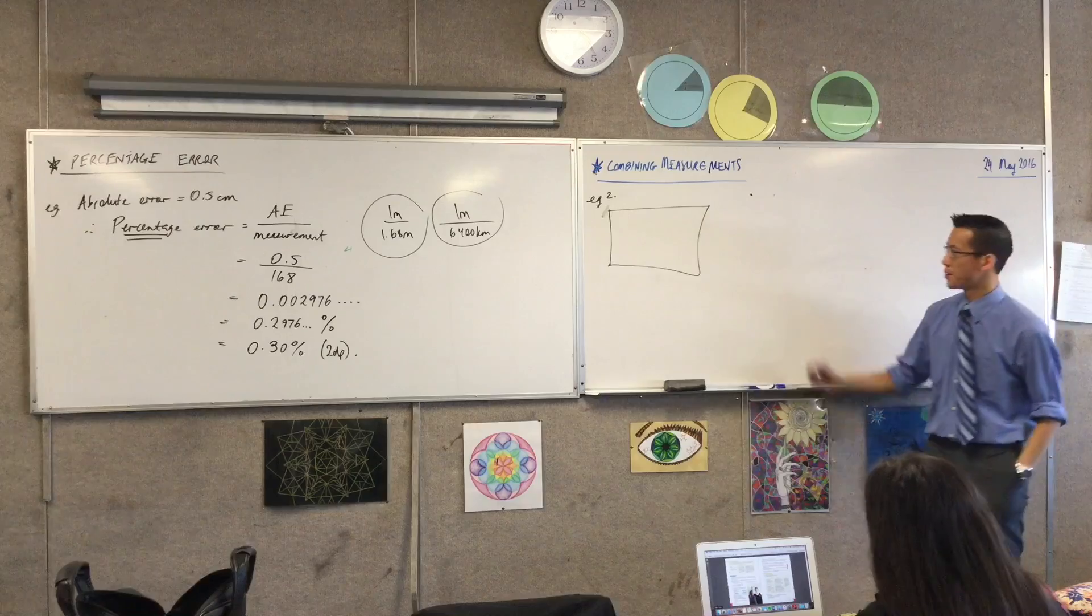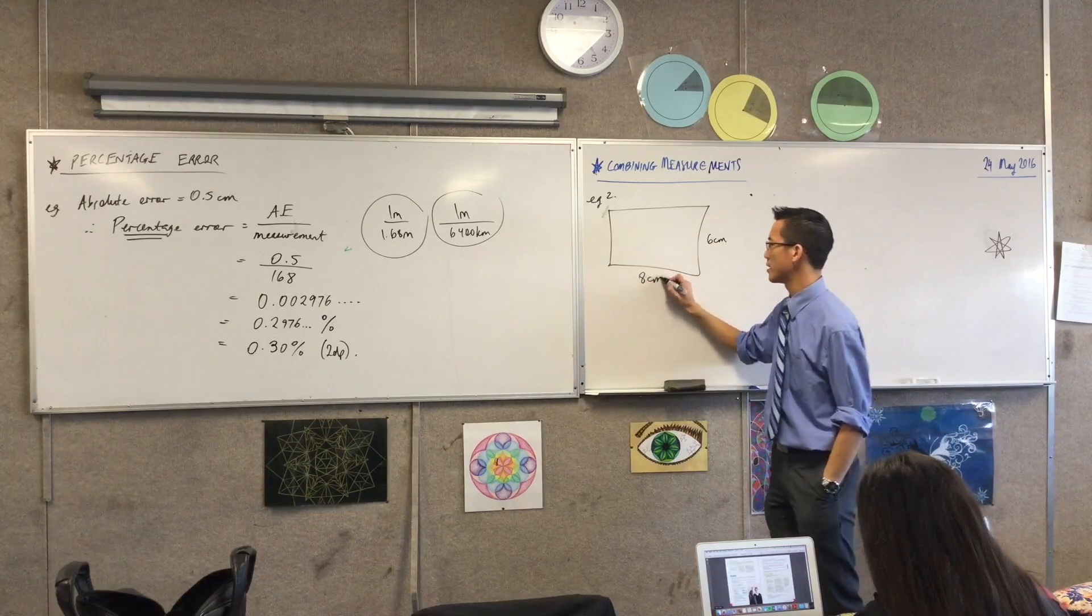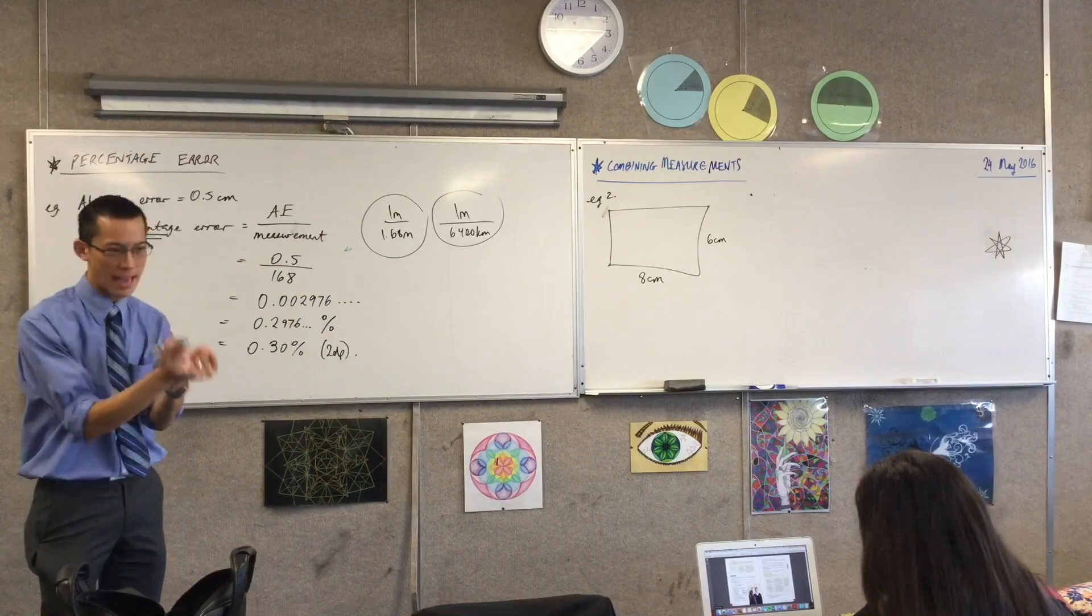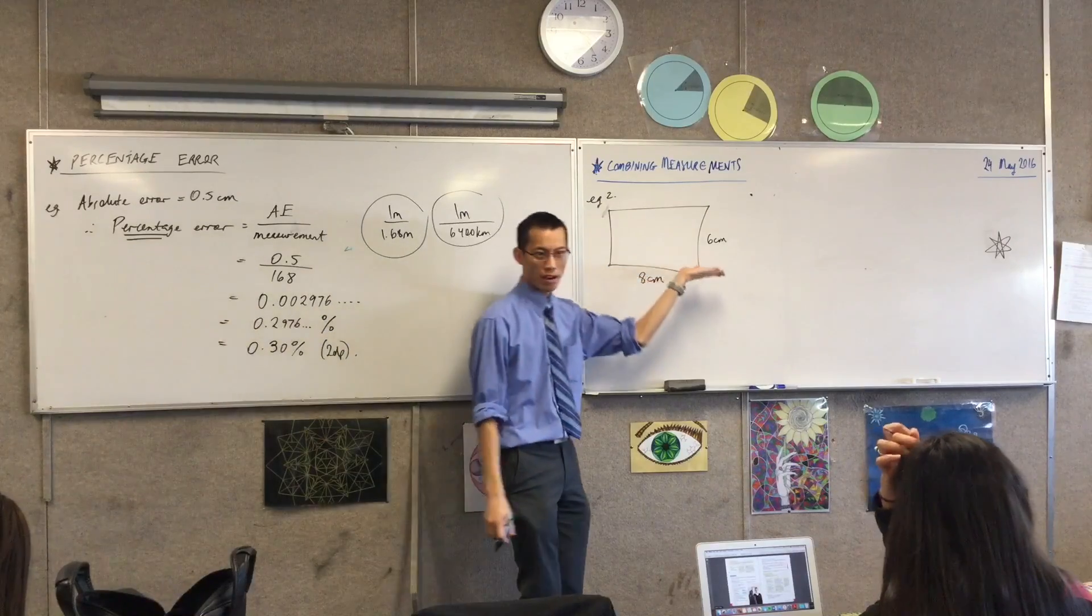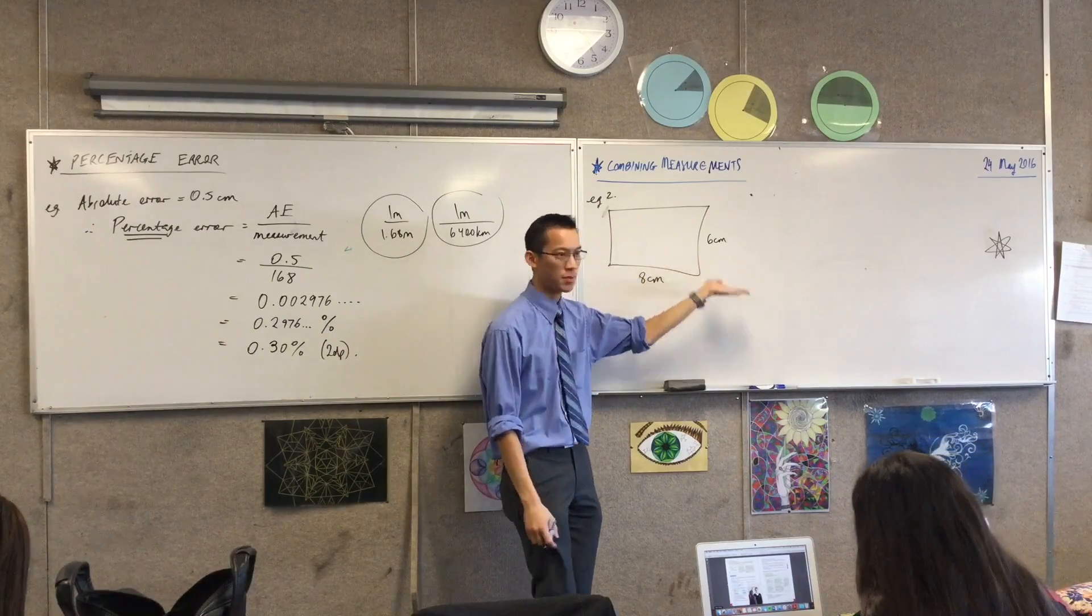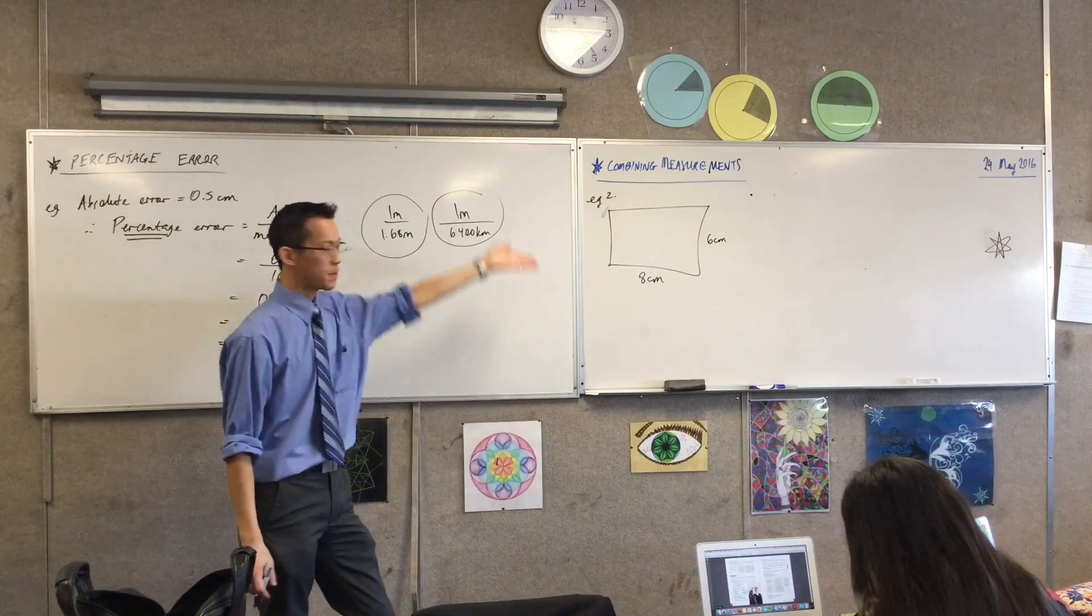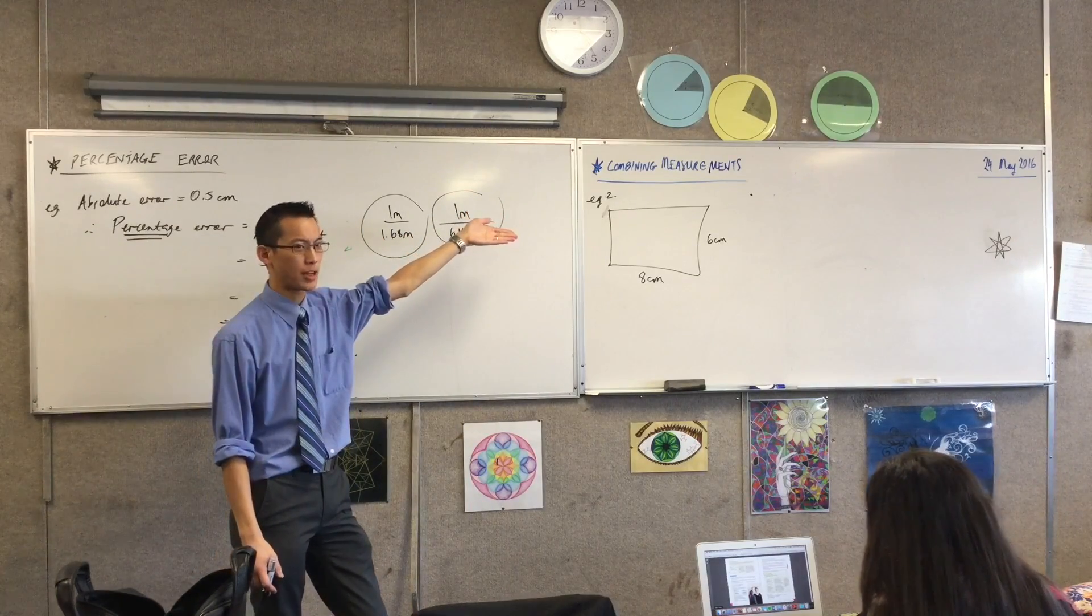So let's just suppose that this rectangle is 6cm by 8cm. And now that we're in a world which comprehends the fact that there's error here. Before, like when you met this in year 7, you just kind of assumed, oh, it says 6cm, it must be exactly 6cm. But you guys know, just because I say 6cm there, if I measured it out, it might not be 6cm. What else could it be?